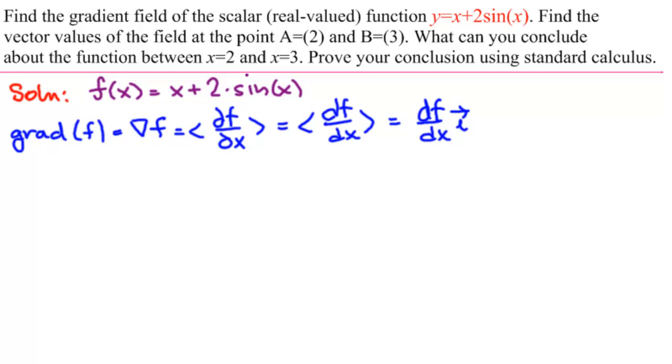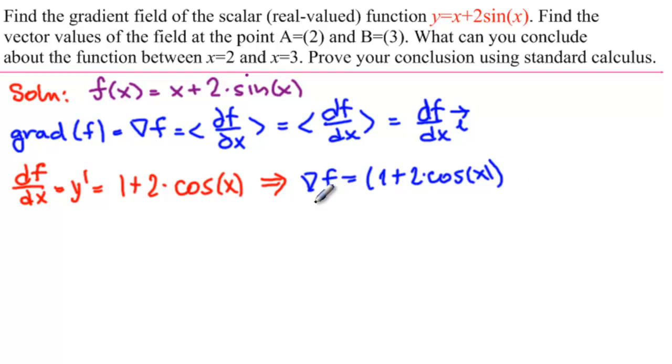So we need to find df dx, which is of course just the derivative. So df dx equals y prime equals 1 plus 2 times cosine of x. So this means that del of f is equal to 1 plus 2 times cosine of x, all of that times i. That's what we have. That's the answer to the first part of the problem. Find the gradient field of that function.